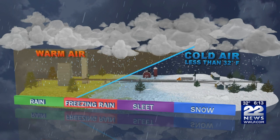Sleet happens when the frozen precipitation melts in a shallow layer of warm air, but refreezes partially before hitting the ground, as the layer of cold air near the surface is thicker than with freezing rain.